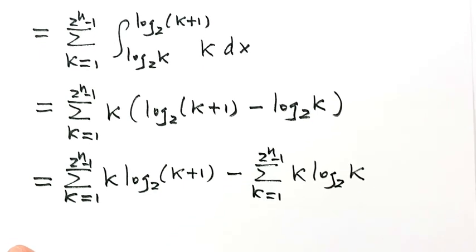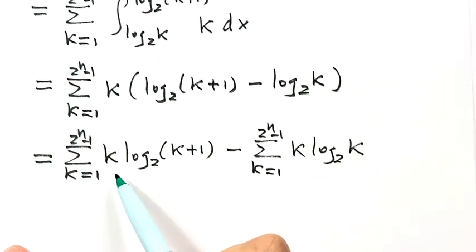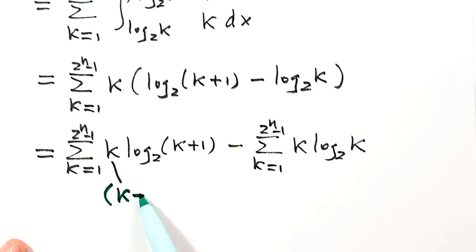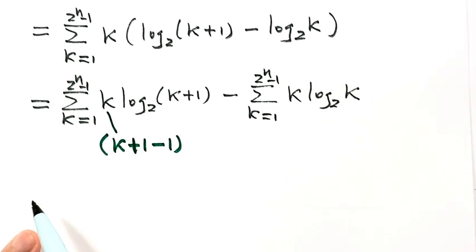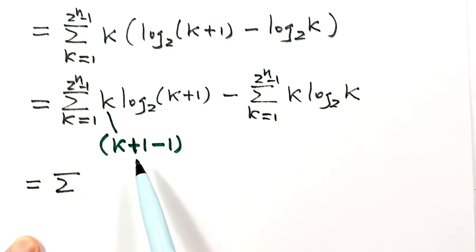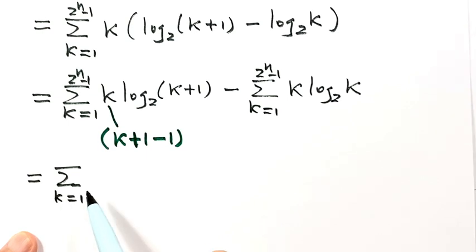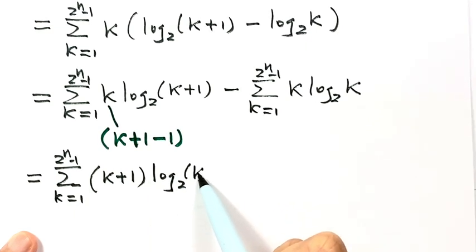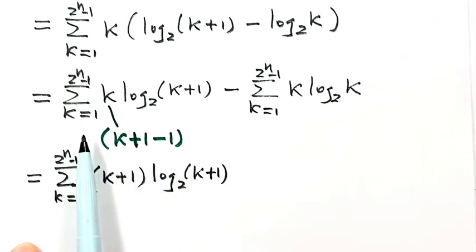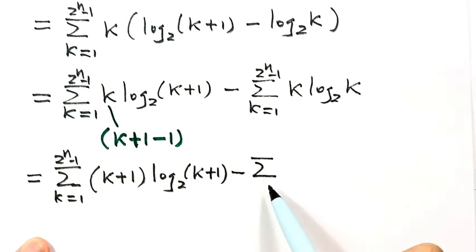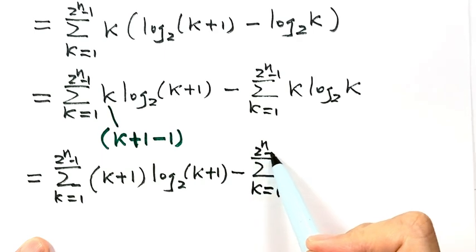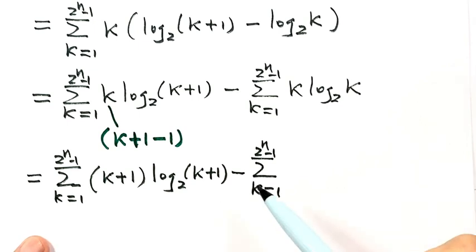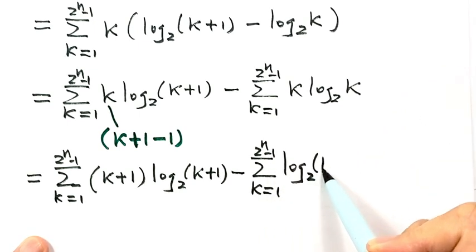Because the first sum has k plus 1 and the second has k, we rewrite k as k plus 1 minus 1. Then we separate this sum into two parts. The first part is k plus 1 times log base 2 of k plus 1, summed from k equals 1 to 2 to the power n minus 1. The second part is minus the sum of log base 2 of k plus 1, from k equals 1 to 2 to the power n minus 1.